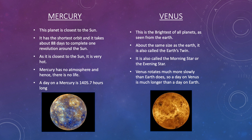Now let's talk about Venus. This is the brightest of all planets as seen from the Earth. About the same size as the Earth, it is also called the Earth's twin. It is also called the morning star or evening star. Venus rotates much more slowly than the Earth does, so a day on Venus is much longer than a day on Earth.